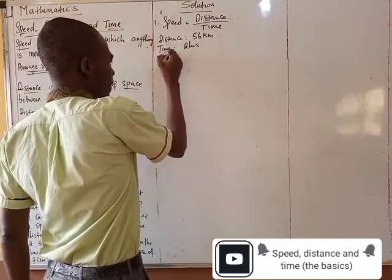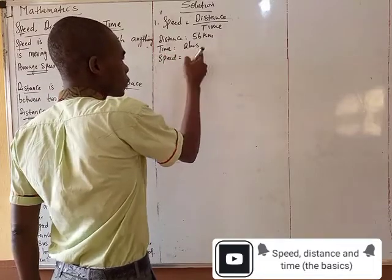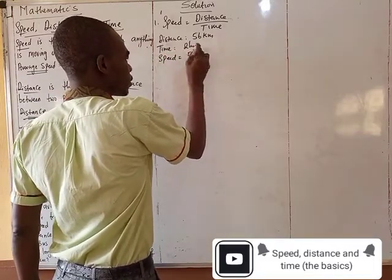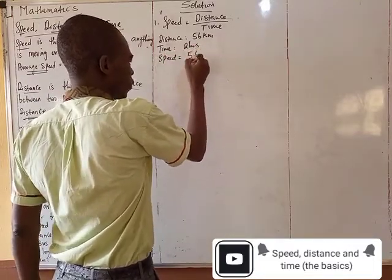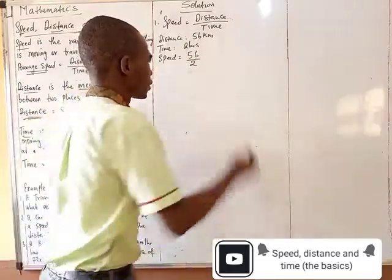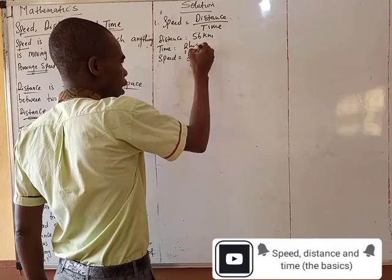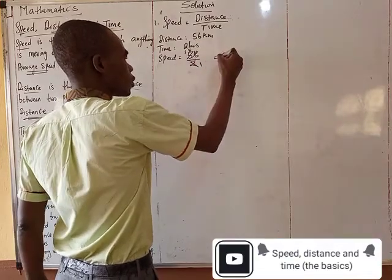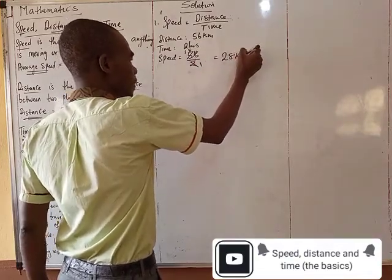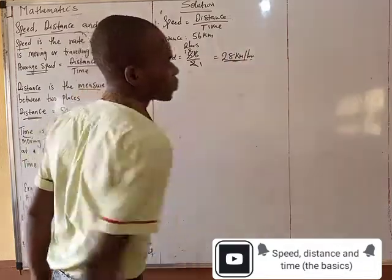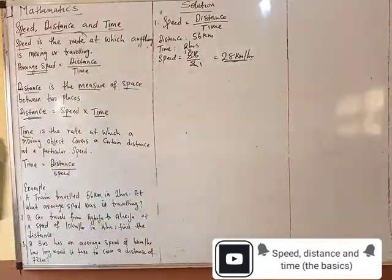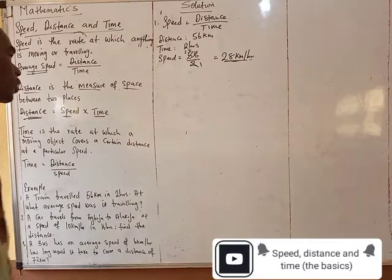So now, the speed, you put it here. It's going to be 56 divided by what? 2. So 2 here is 1. 2 in 5 is 2 remainder 1. It's 16 is 8. So the speed is what? 28 kilometers per hour. Simple. Just simple. Very simple. Very, very easy. Easy, easy.